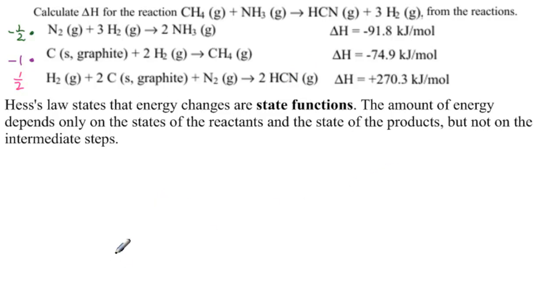So what do we have? We have, let's write these down: minus one half N2, minus one half times three is minus three halves H2. And on this side, let's draw a line. We have minus one half times two, so minus NH3.